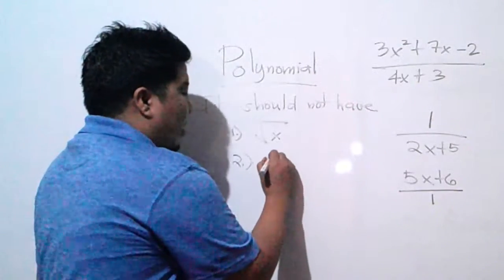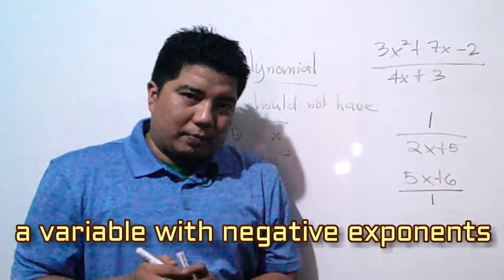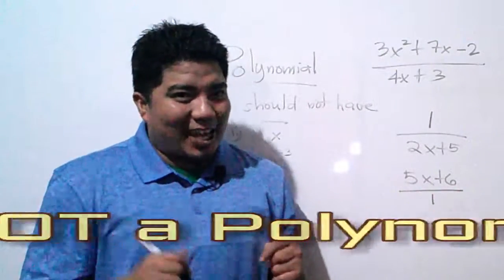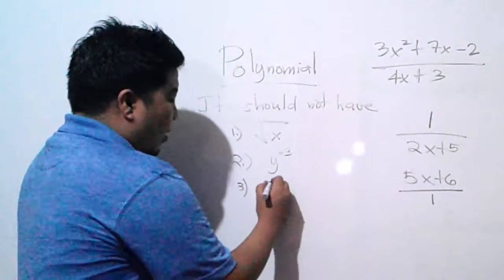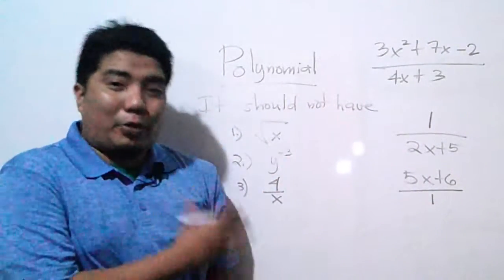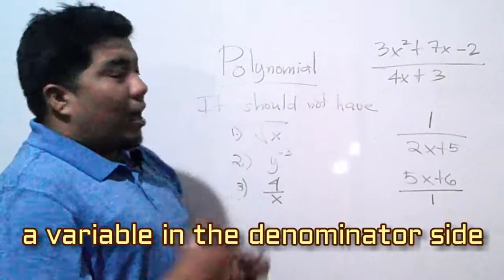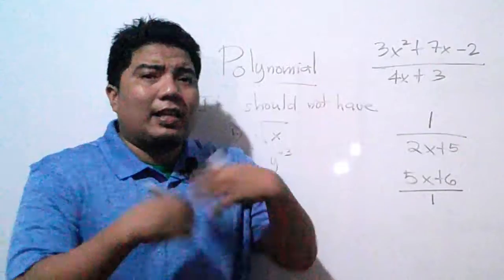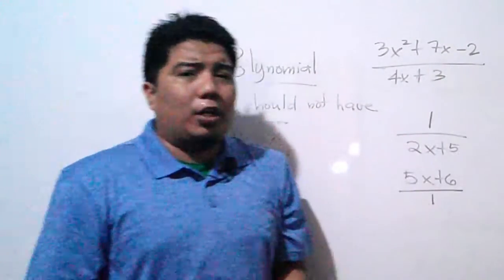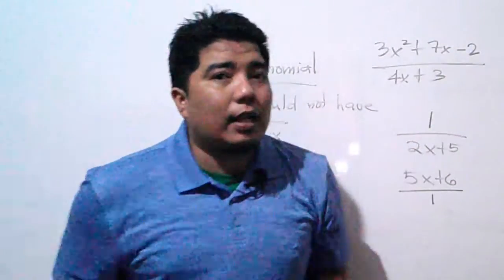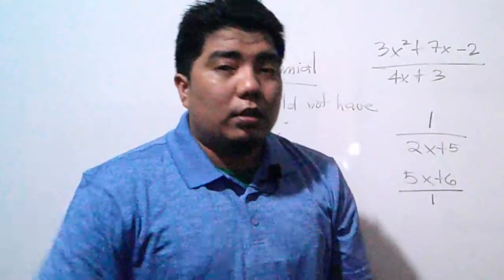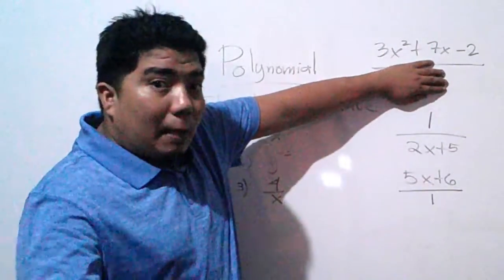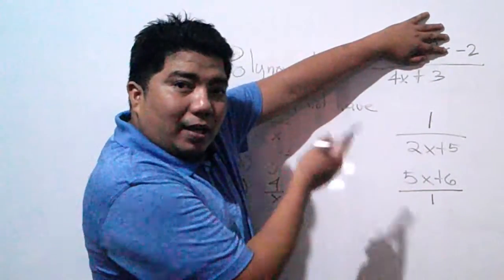Second, if you have a variable with a negative exponent — for example, y to the negative 3 — that is not a polynomial. Third, a variable that appears under the denominator side makes that part not a polynomial. Remember to look at the numerator and denominator separately. If each part is a polynomial by itself, then the whole expression can still be a rational algebraic expression.